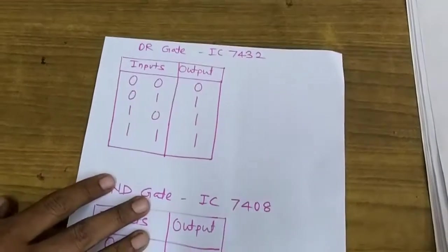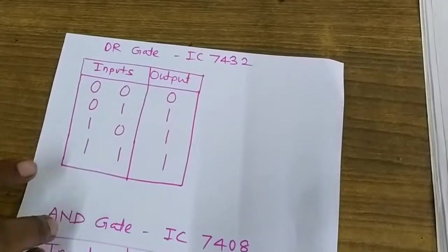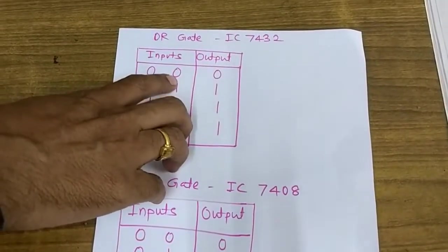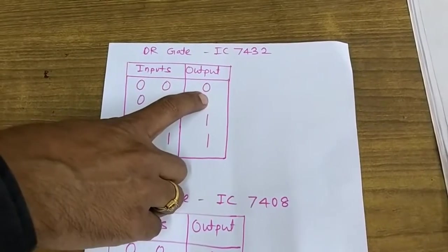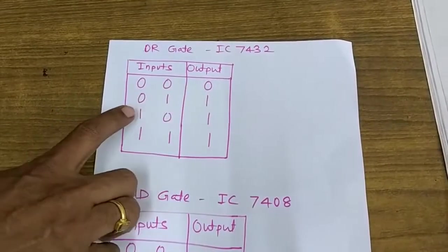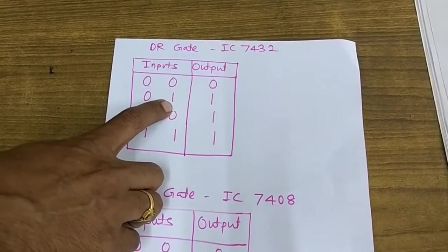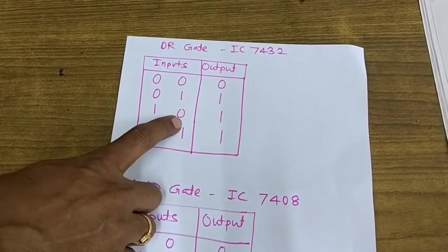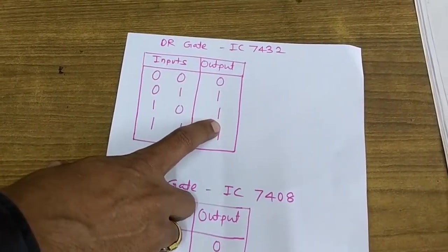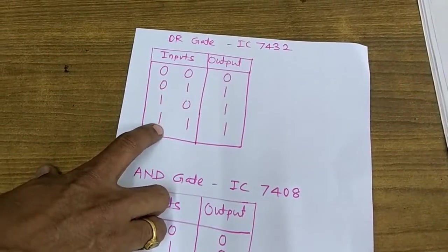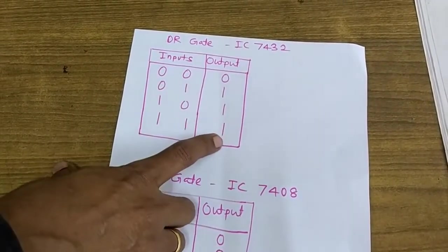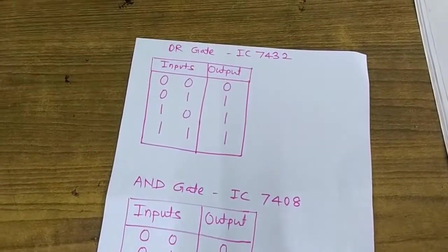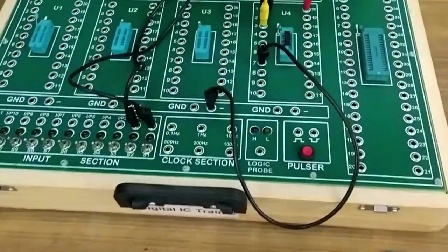Now let us go through the truth table of the OR gate. When 0,0 is applied at input, you will get 0 as output. When 0,1 is applied at input, then 1 is the output. When input is 1,0, then 1 is the output, and finally when both inputs are 1, output is 1. This is to be realized by using the trainer kit. Let us move to the trainer kit.